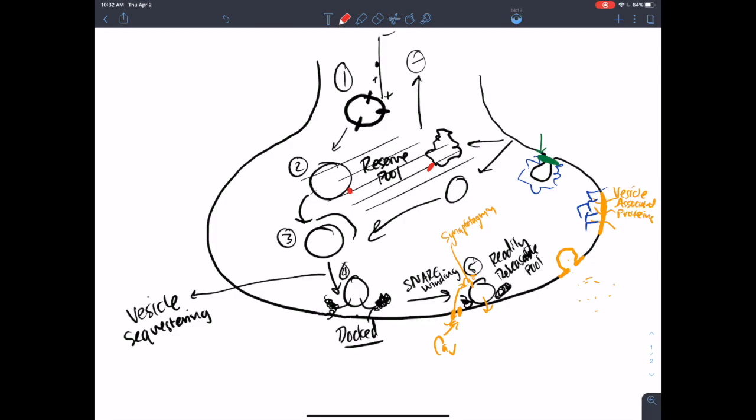So if you really need to be releasing neurotransmitter, the cell kind of has a mechanism in place to say, all right, let's mobilize these old synaptic vesicles.